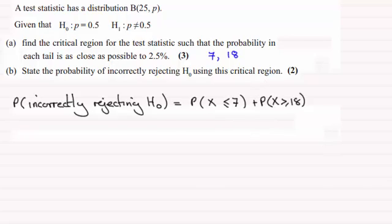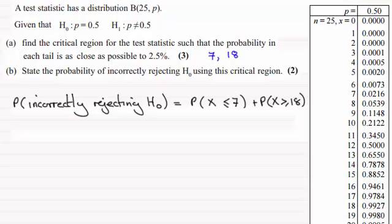And we can turn to our tables. We've got an extract here and we can see that the probability of X being less than or equal to 7 is this value here. But when it comes to working out the probability of X being greater than or equal to 18, we've got to do 1 minus the probability of X being less than or equal to 17. I'll just put it down here just to show it in the working.